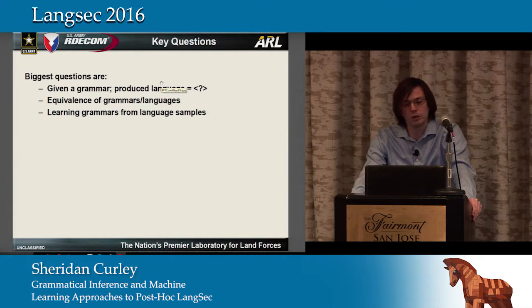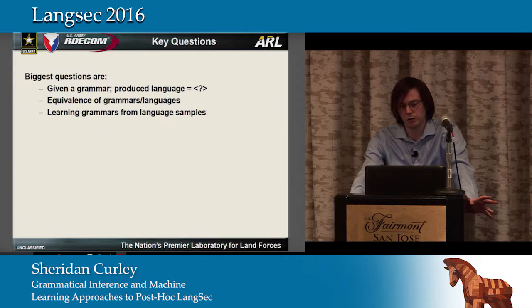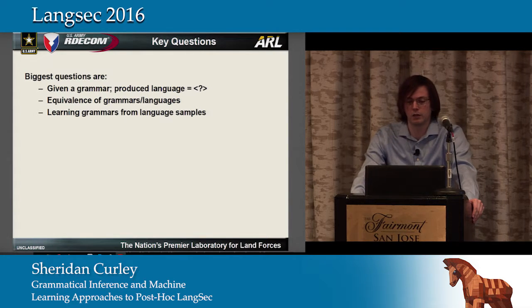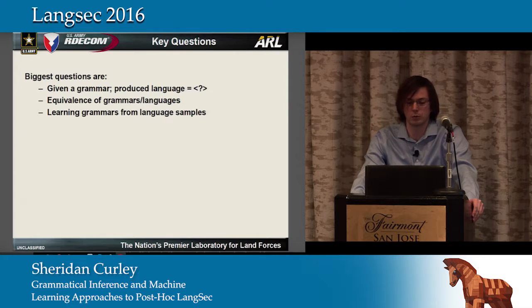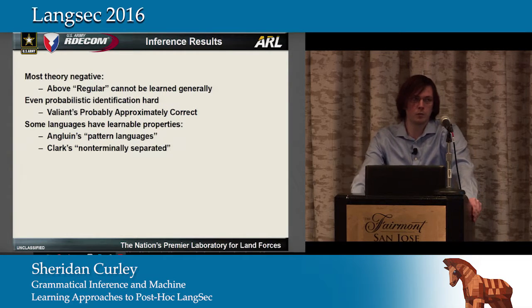The key questions from the grammatical inference side are: given a particular grammar, can we determine what its produced language is in its entirety? If we have two grammars or two languages, can we determine if they're equivalent? And if we're given samples of a language — positive string examples — can we learn a grammar from that? As it turns out, in the realm of theoretical grammatical inference, the answer is mostly no.